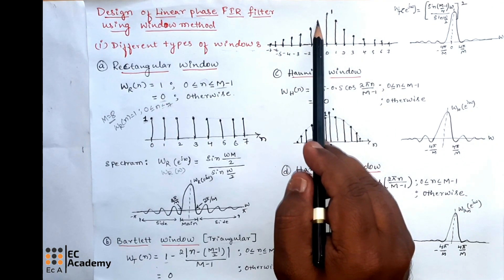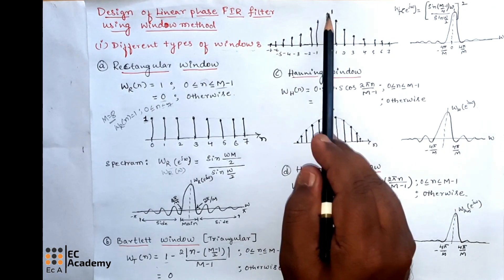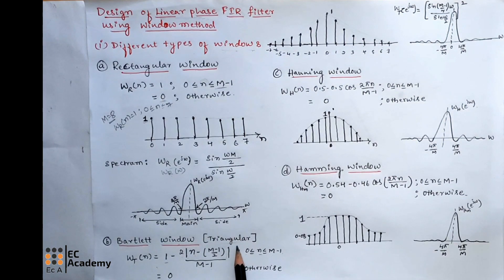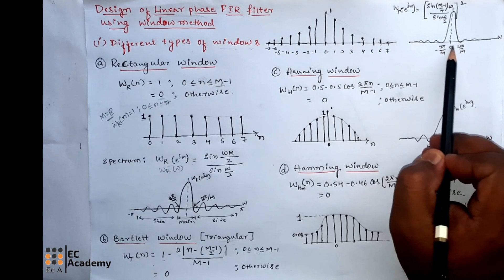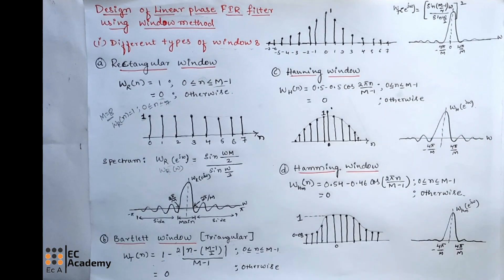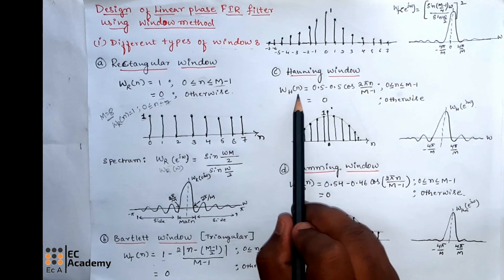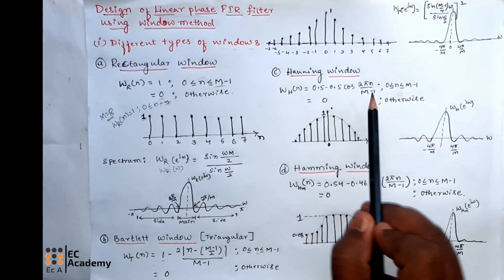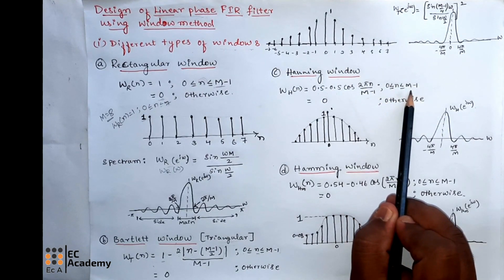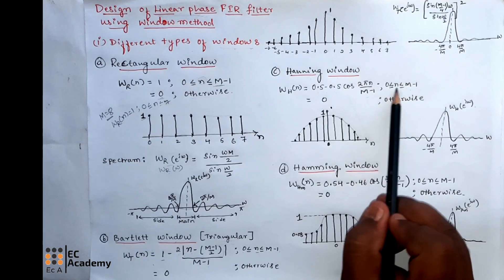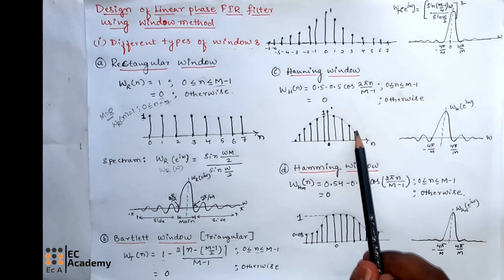Towards the negative side also, the sample decreases gradually — this is the triangular shape, which is why it is also known as the triangular window. This is the spectral representation of the Bartlett window. The next type of window is the Hanning window, given as WH(N) = 0.5 − 0.5·cos(2πN / (M−1)) for N ranging from 0 to M minus 1, and 0 for other values of N.